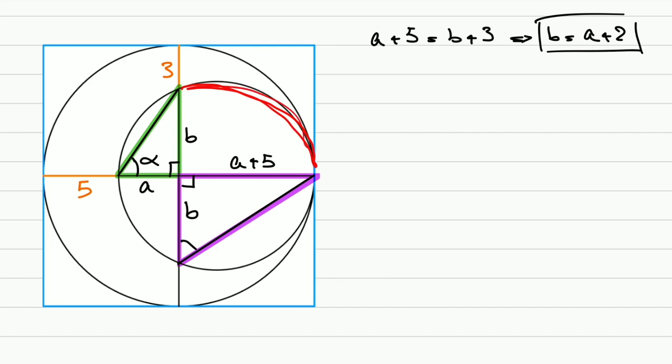And that's also the case for this angle, an inscribed angle facing the same arc. So this is also alpha. And the third angle must be equal as well. And that means this green triangle is similar with this purple one.